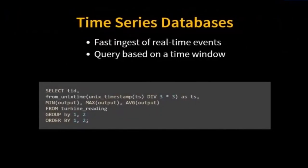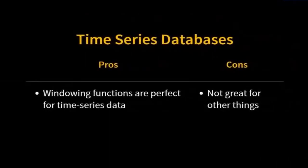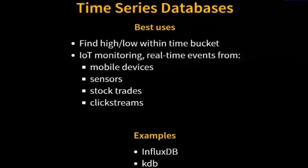Next, let's look at time series databases. In a time series database, rather than just rows and columns with each cell holding one value, each cell holds a range of values — all the things that fit within a time bucket. It's great for fast ingest of real-time events. I'm able to query events and inside that time bucket do aggregate functions like min, max, count; I can average or normalize for missing data. On the downside, it's not really tuned for anything else. It's great when I'm trying to monitor mobile devices, sensors, or stock trades — something very time-centric — and I can build, for example, candlestick charts.